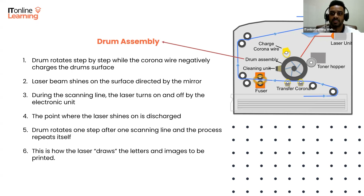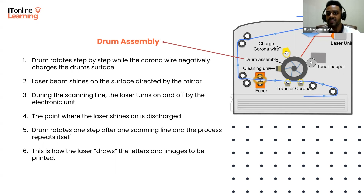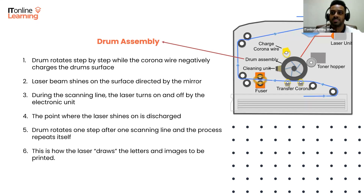During a scanning line, the laser turns on and off as controlled by the electronic units. When the laser is on, it discharges the point where it shines. After one scanning line, the drum rotates one step and the process repeats. In this way, the laser draws the letters and images to be printed as a pattern of lack of electrical charges on the drum surface.